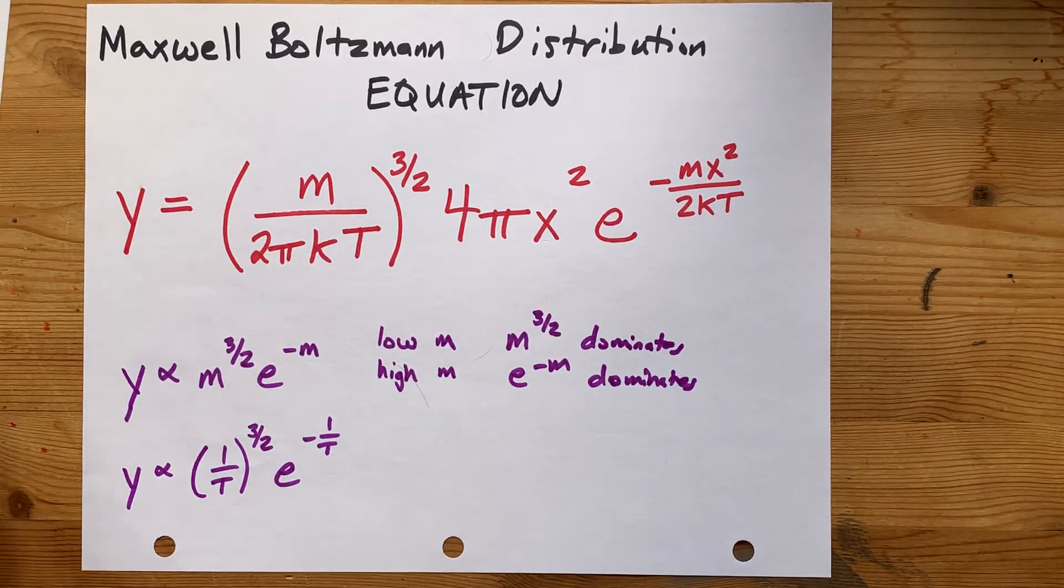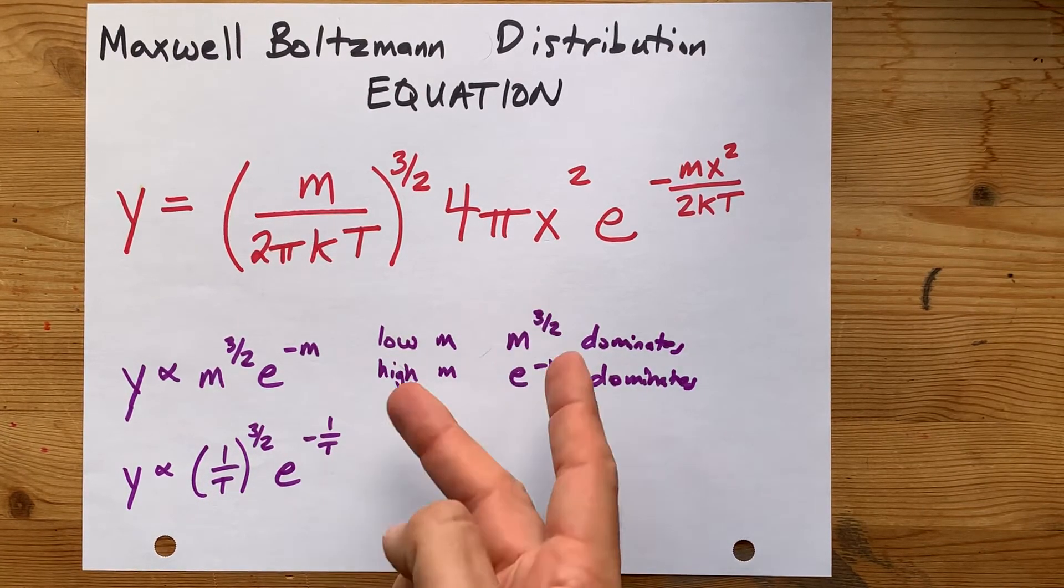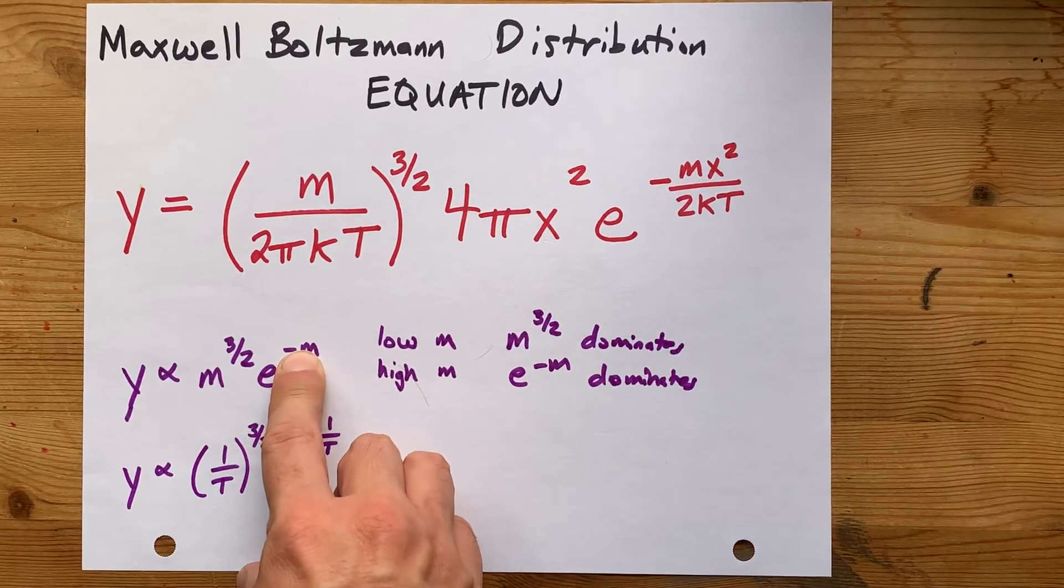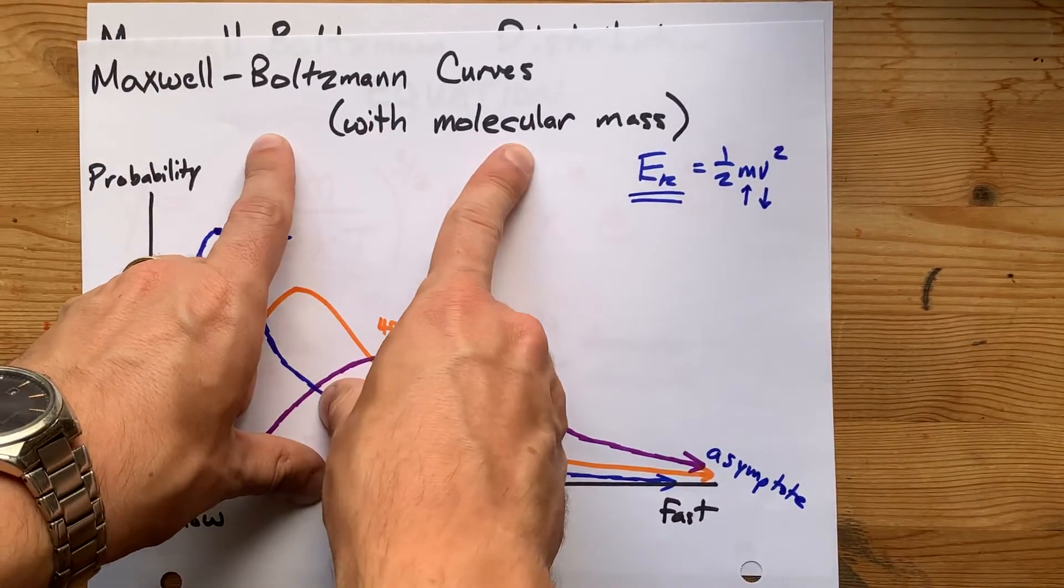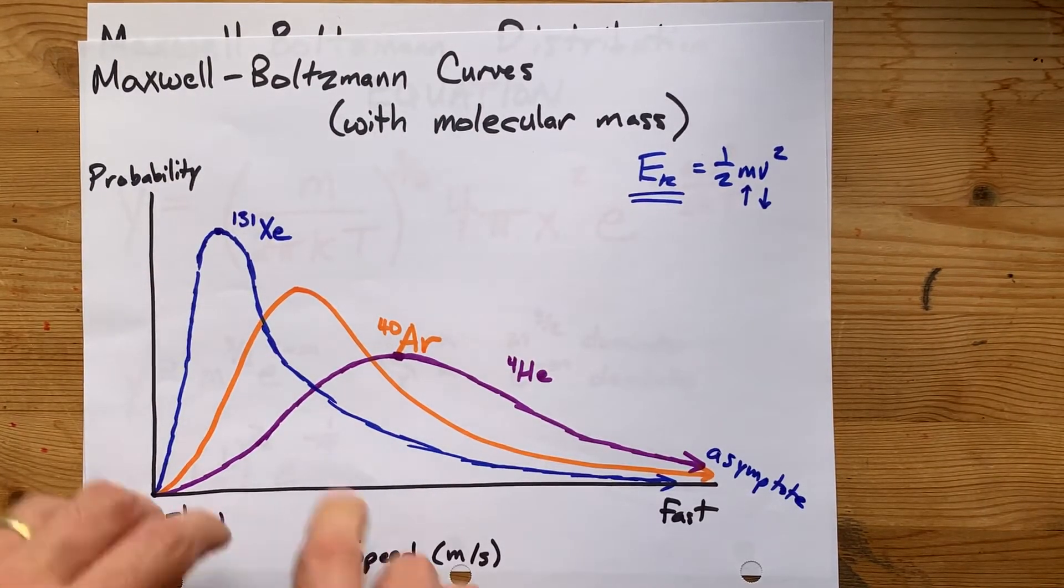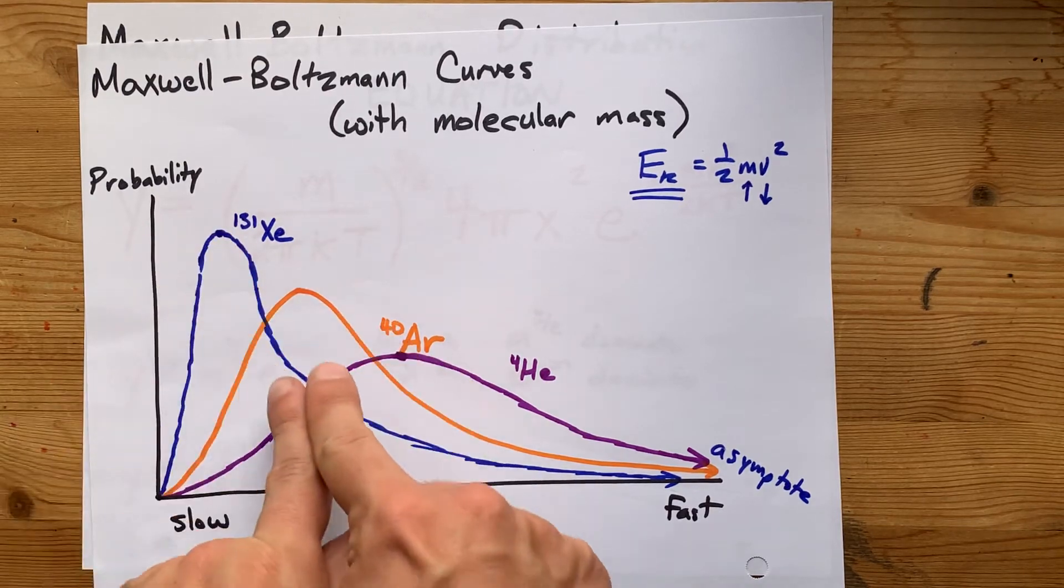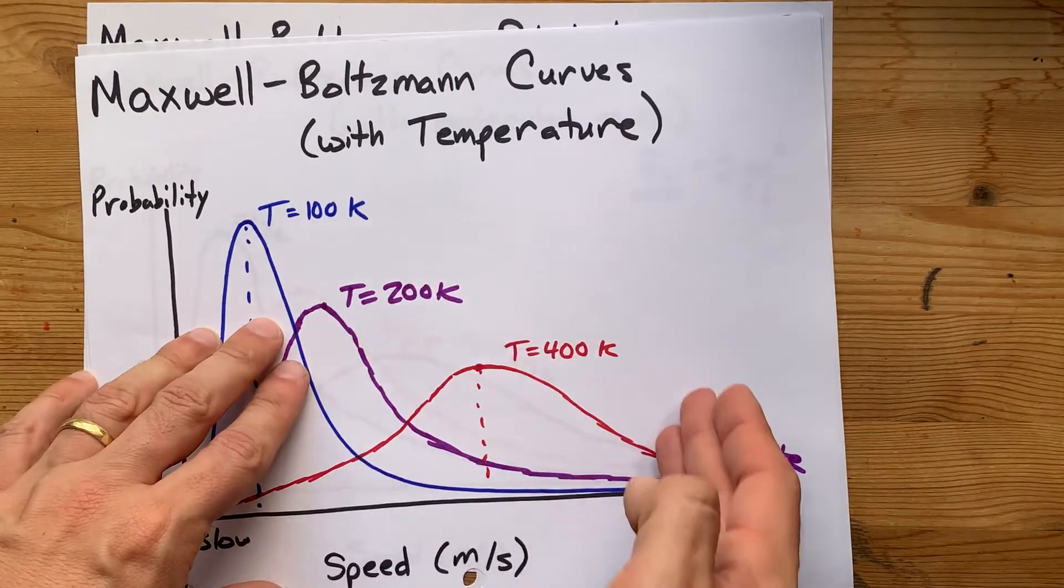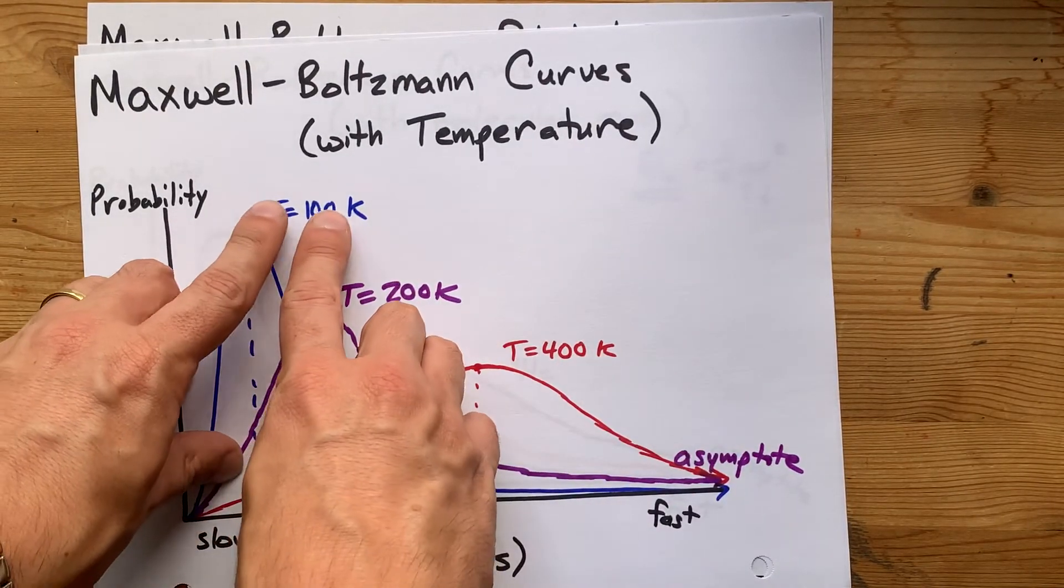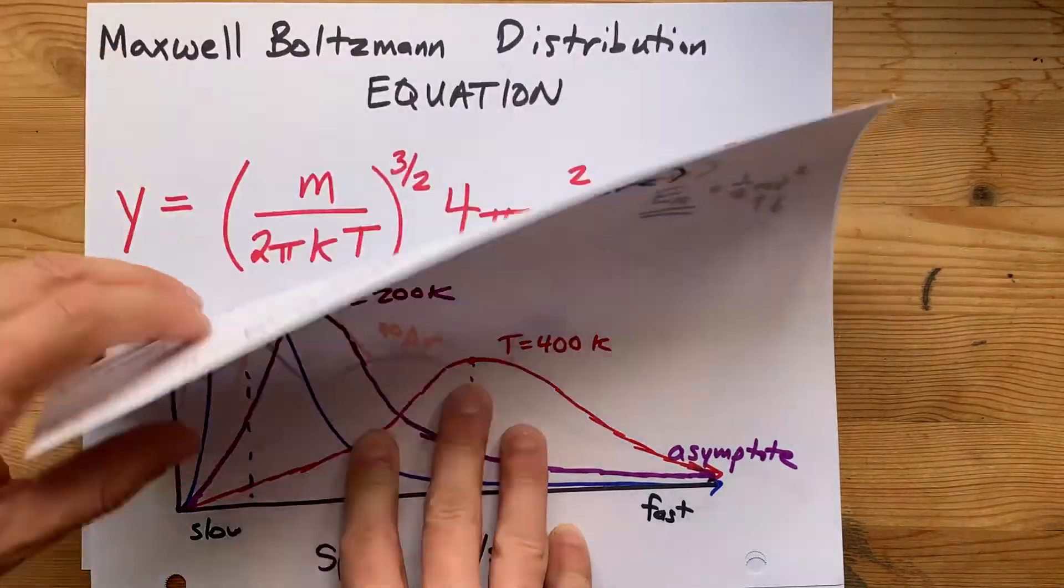But what it does mean is that increasing the temperature has the opposite effect as increasing M. If you take a look at the Maxwell-Boltzmann curves for mass, the heavier particles with the higher M have their peak up here. If you look at the Maxwell-Boltzmann distributions for temperature, it's the lower temperatures that have their peak in the same place.